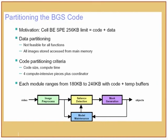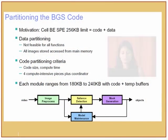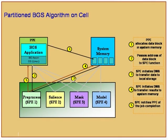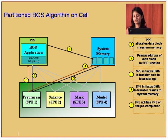Data partitioning was not feasible for all functions, so all images are stored and accessed from main memory. Code partitioning criteria are code size and compute time. We identified four compute-intensive pieces plus a coordinator; each module ranges from 180 to 240 kilobytes. The process: allocate data block in system memory, pass the address to the SPE function, the SPE initiates DMA to transfer data to local storage, initiates DMA to transfer results back, then notifies the PPE of job completion.